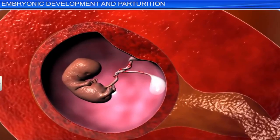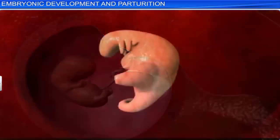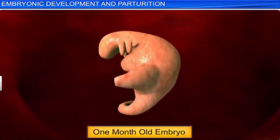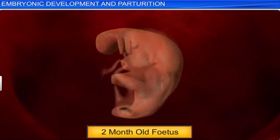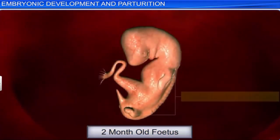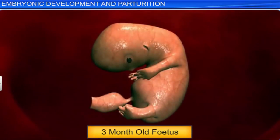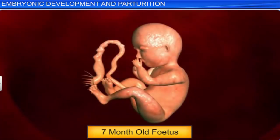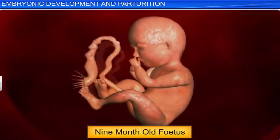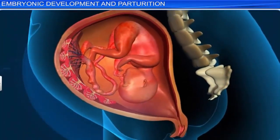The embryo stays inside the uterus for nine months, which is called the gestation period. During this period, the embryo undergoes several developments. By the end of the first month, the embryo develops a heart. The end of the second month marks the transition from embryo to fetus, with developing fetal limbs and digits. By the end of the third month, most organs are already formed. Another four months and the fetus is rapidly gaining weight, with bones getting stronger. By the beginning of the ninth month, the fetus is fully developed and assumes the position it will take during delivery.